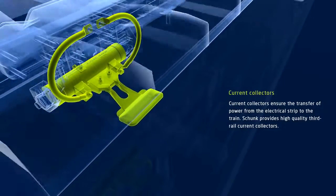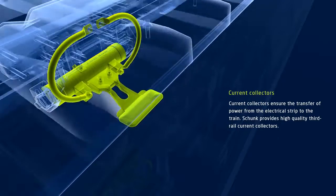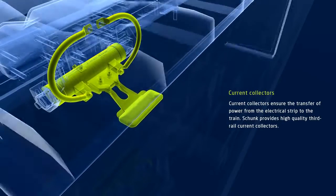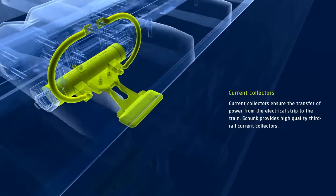Current collectors transfer the electricity from the third rail to the train, and these current collectors come from Shunk, in the expected top quality.